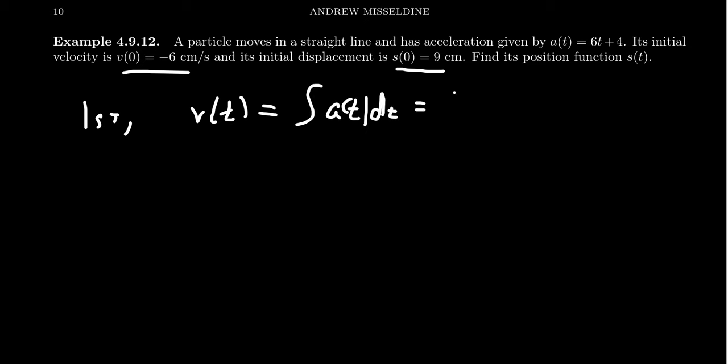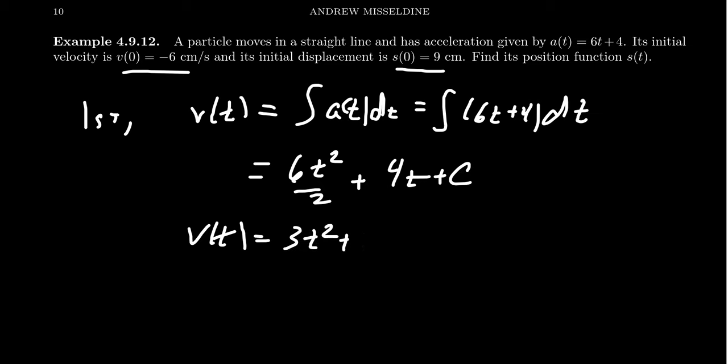Velocity is going to equal the antiderivative of acceleration, which by the formula we're given, the acceleration is 6t + 4 cm/s². We're going to integrate that thing, for which we're going to get 6t²/2 + 4t + a constant. Simplifying, we see that the velocity is going to equal—because 2 goes into 6 three times—3t² + 4t + C. We have that C again. What are we going to do with C?